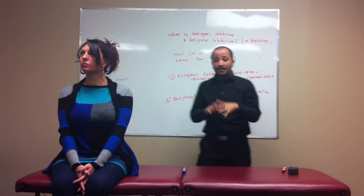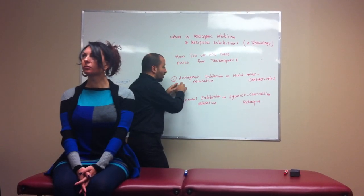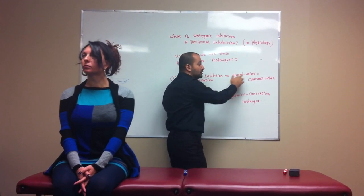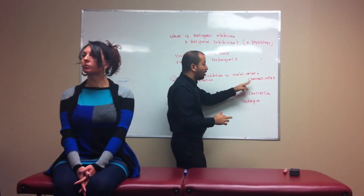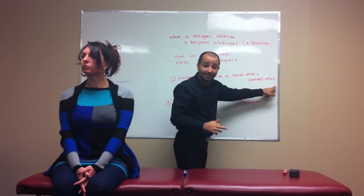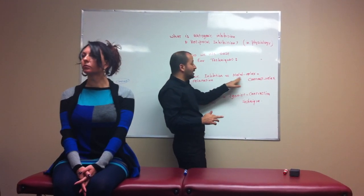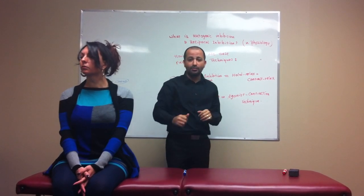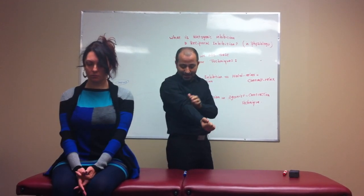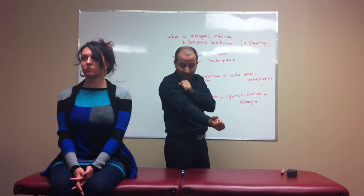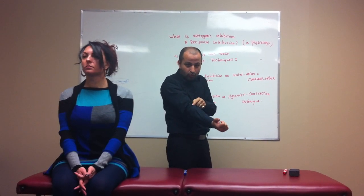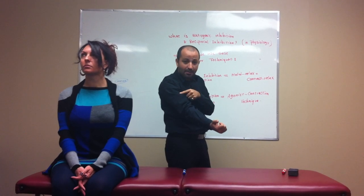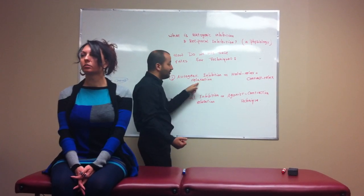How do we use this technique? The technique is called autogenic inhibition relaxation. We also call it the hold relax technique. We also call it the contract relax technique. Contract relax and hold relax are very similar, but I'll tell you the little difference between them. To do that — if the muscle is tight — I'm going to stimulate the GTO to relax the same muscle. That's called autogenic inhibition relaxation.